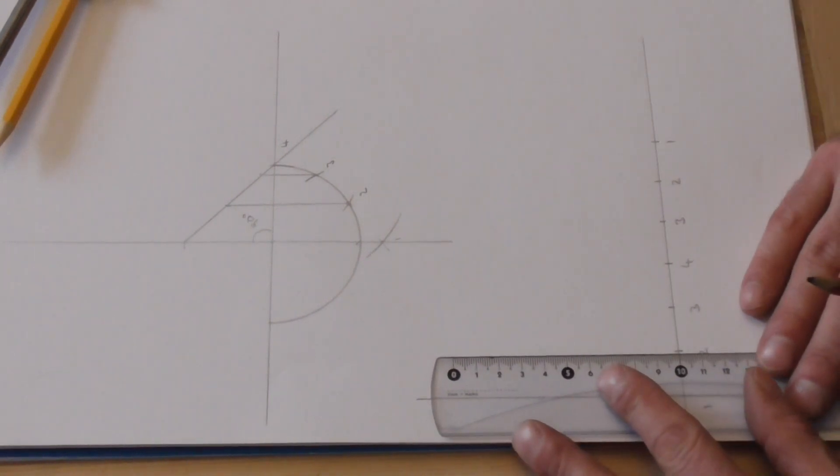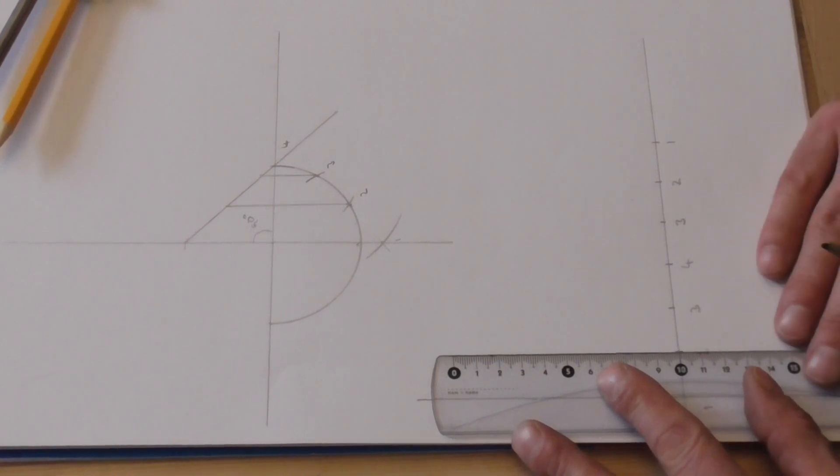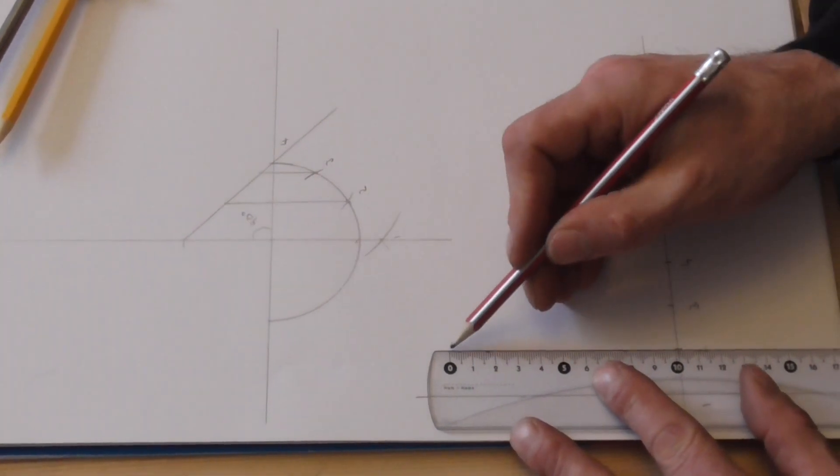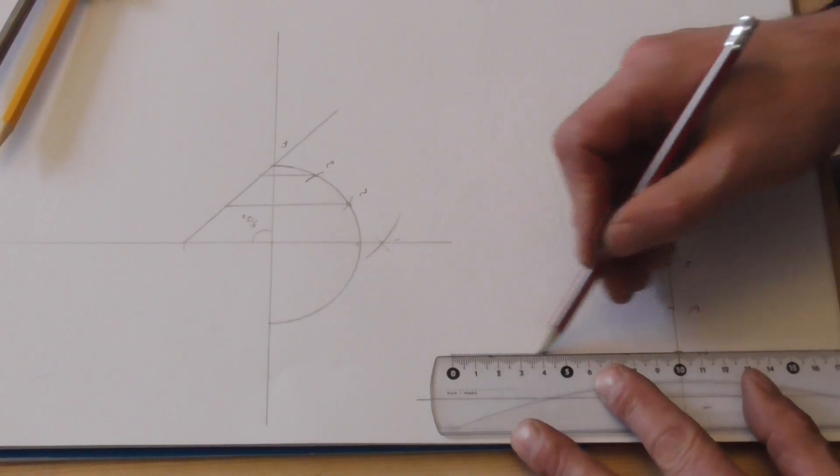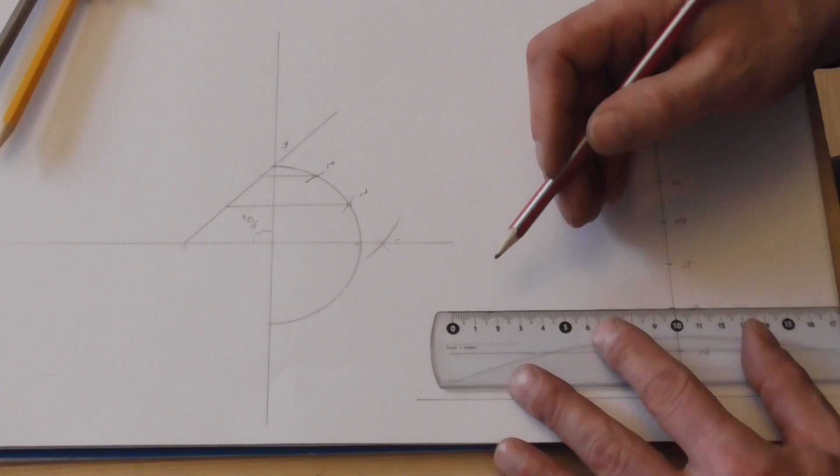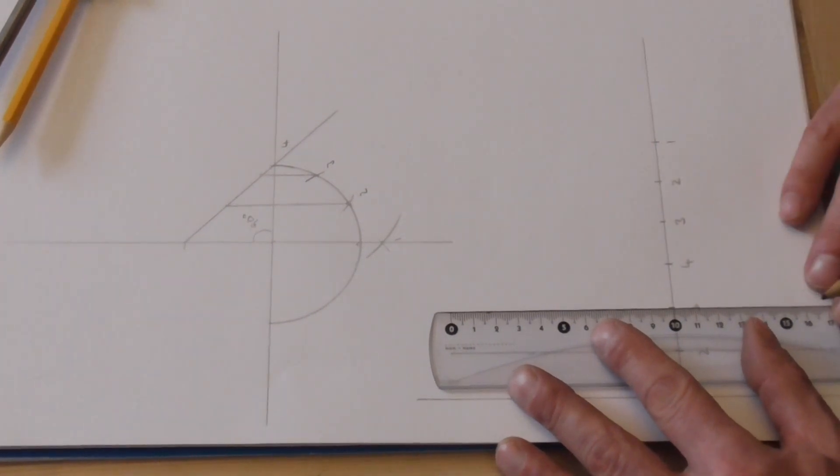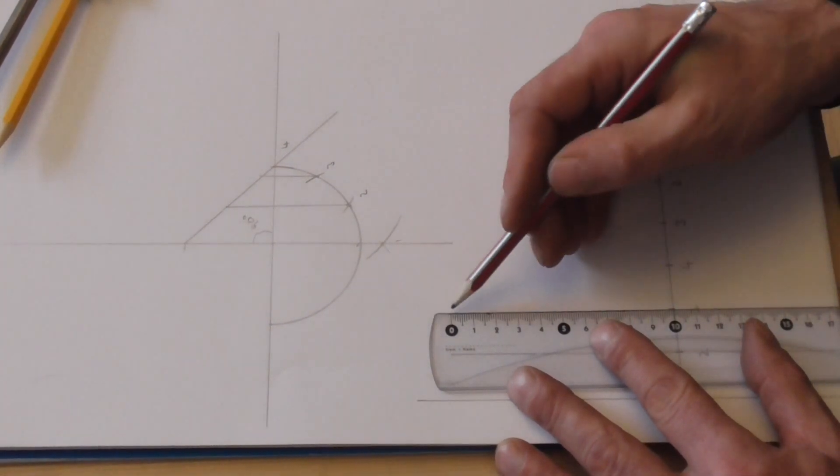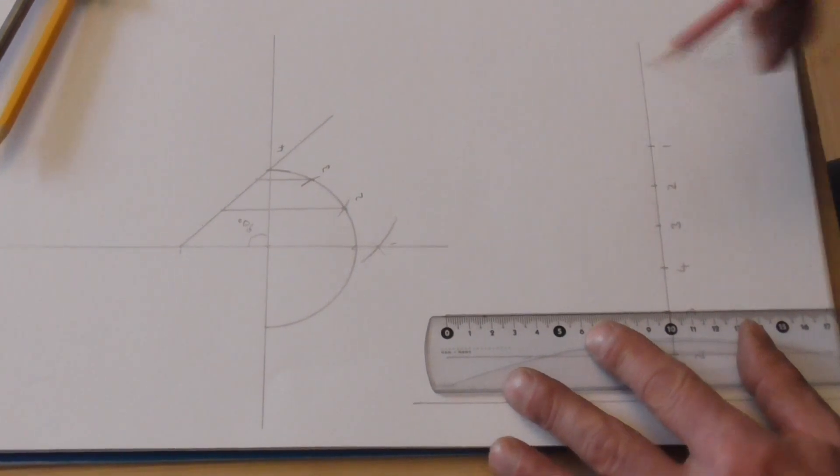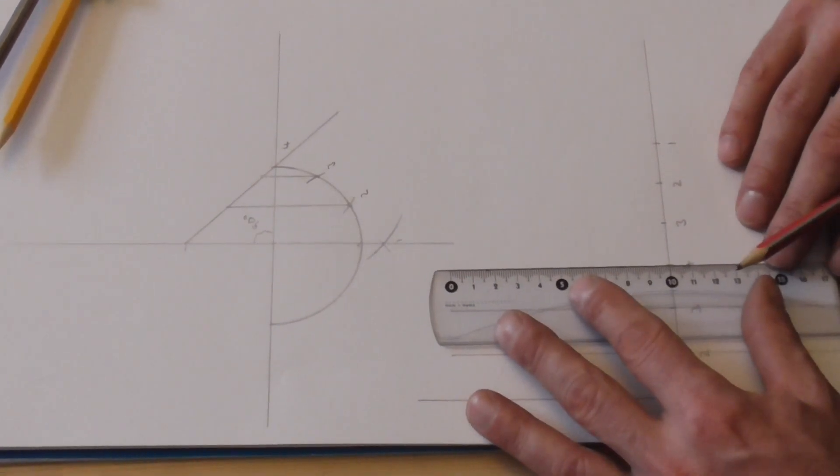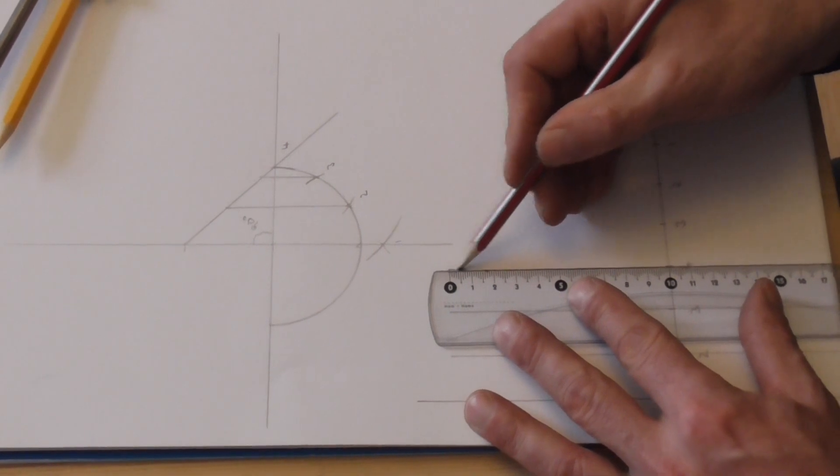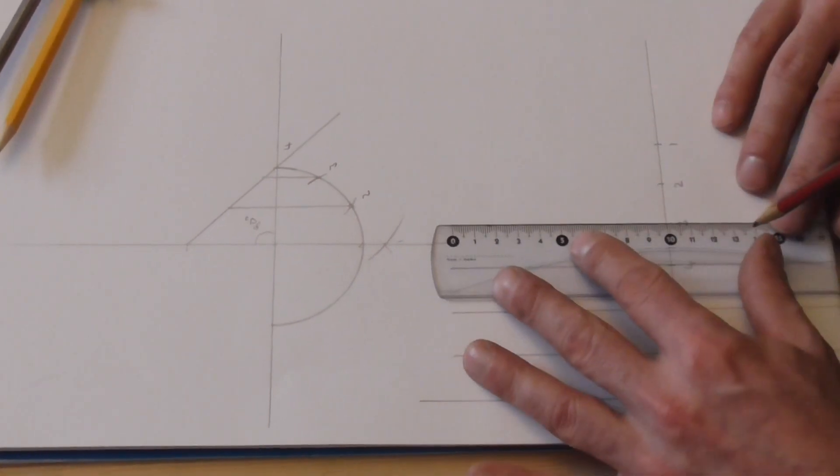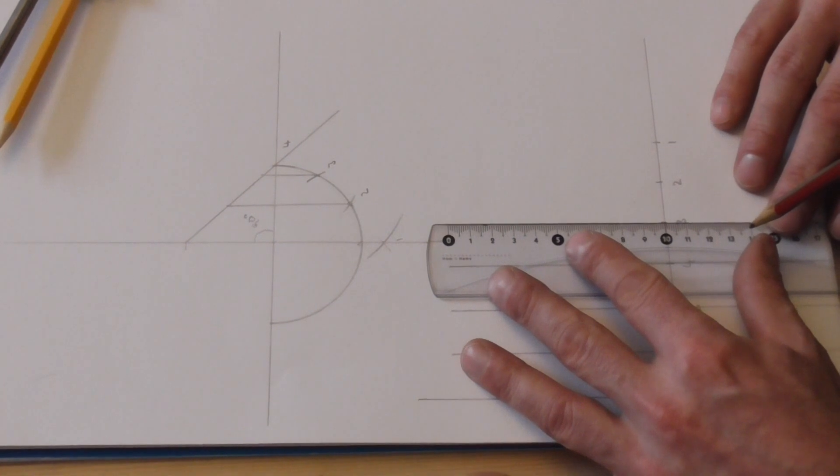Now, we're drawing our vertical lines through each numbered point.